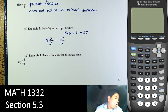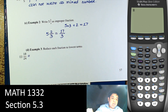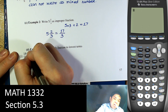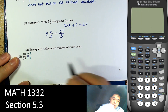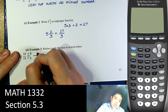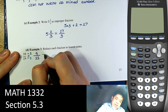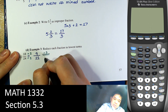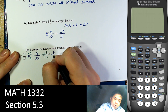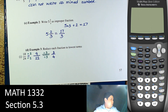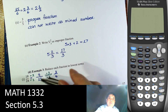Next we have some simplification — reduce each fraction to the lowest term. We divide the top and bottom by common numbers; it doesn't have to be the biggest one, you can work step by step. Both 9 and 12 are divisible by 3, so 9 divided by 3 is 3, and 12 divided by 3 is 4 — that's 3/4. We don't have to get there in one step.